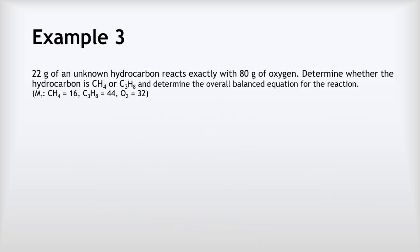In example three, 22 grams of an unknown hydrocarbon — hydrocarbons are compounds of hydrogen and carbon only — reacts with 80 grams of oxygen. We need to determine whether the hydrocarbon is CH₄ (methane) or C₃H₈ (propane), and find the overall balanced equation. Our approach is to work out both possible balanced equations first, then calculate mole ratios for the hydrocarbon and oxygen to see which equation matches.